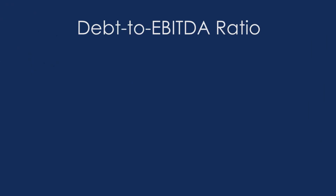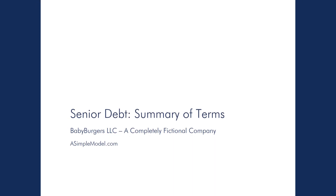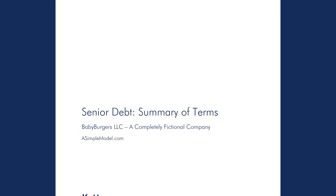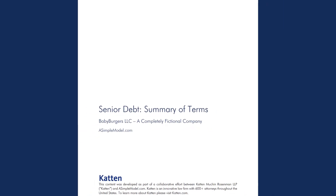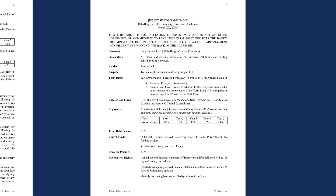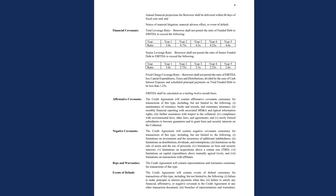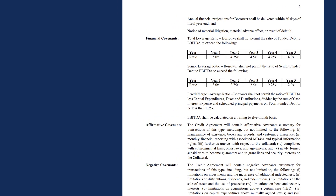Perhaps the most straightforward comparison is the debt-to-EBITDA ratio, which, as the name suggests, compares a company's debt balance to the company's annual EBITDA. This ratio is frequently included in lender term sheets and in the credit agreement. By way of example, in this senior lender term sheet, you will see both the total leverage ratio and the senior leverage ratio included under financial covenants.